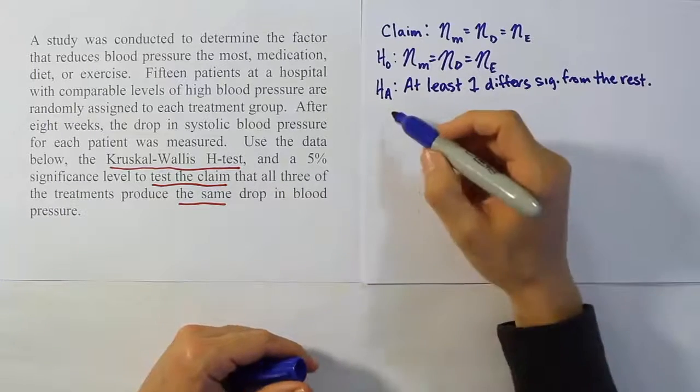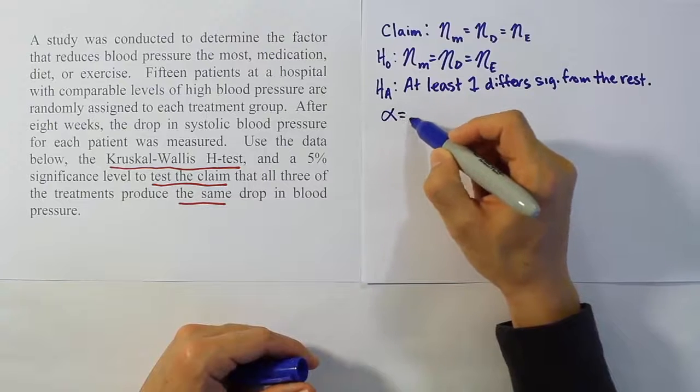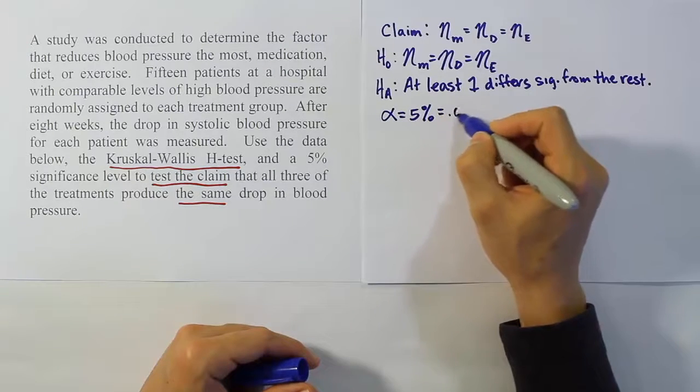Now our next step is supposed to be the data step. Let's just write down that our alpha is 5%. We'll keep that in mind for later.